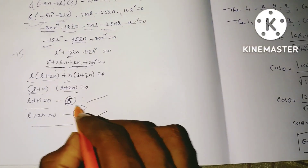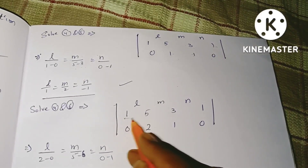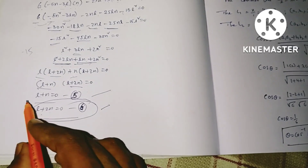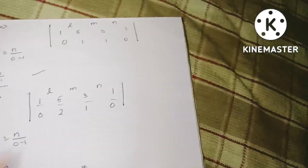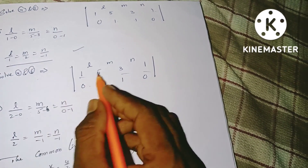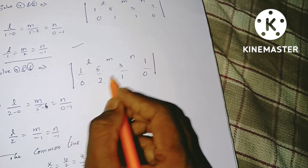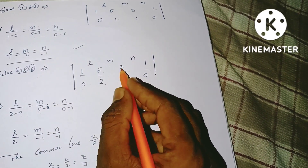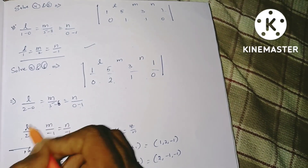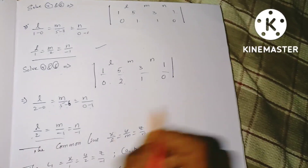Now using equation 4 and equation 6 with same values 1, 5, 3, 1 and equation 6 giving 0, 2, 1, 0: L by (1×2 − 0×5) = M by (5×1 − 2×3) = N by (3×0 − 1×1). So L/2 = M/(−1) = N/(−1). This gives the second line: x/2 = y/(−1) = z/(−1), with a2=2, b2=−1, c2=−1.